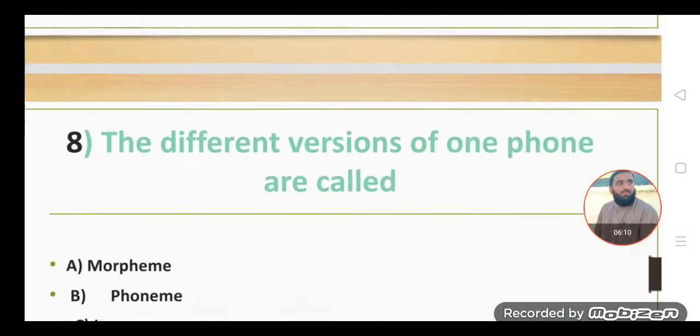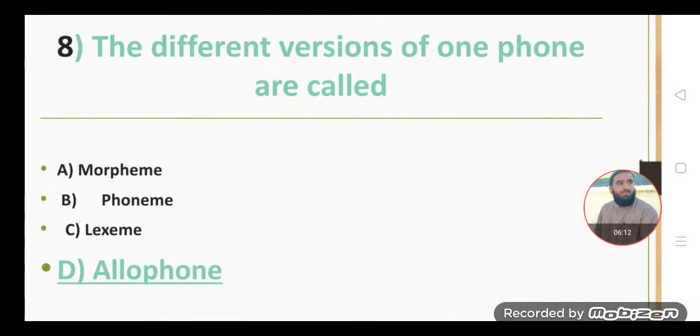Option A is the correct option. The different versions of one phoneme are called allophones. The different versions, or we can say the different realization, variation in pronunciation of the same phoneme, of one phoneme, is called allophone. Option D is the correct option.